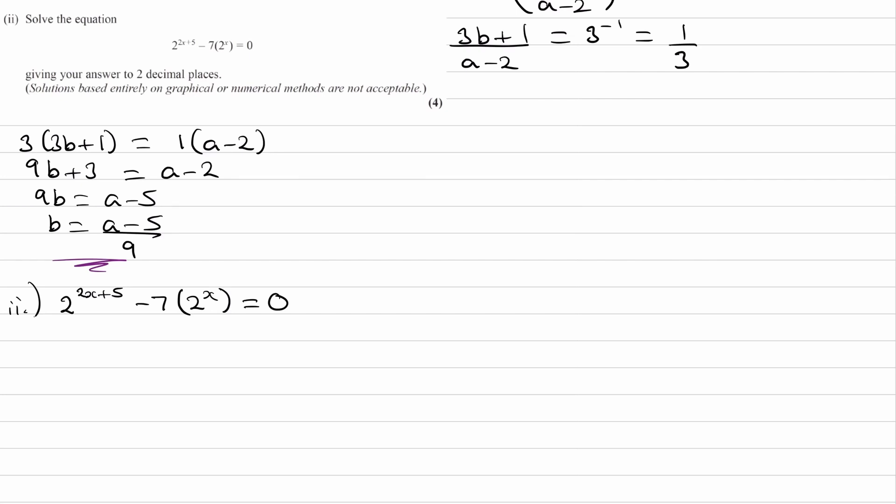So the first term, the 2 to the power of 2x plus 5, I can use this rule. I can use the rule that x to the power of a plus b can be written as x to the power of a, x to the power of b. And the left-hand side then becomes 2 to the power of 2x, 2 to the power of 5. Well, I say left-hand side, I meant just this part. So then, we can then also split this bit up, the 2 to the power of 2x, using this rule.